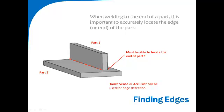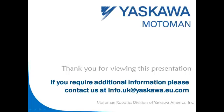Seam finding flexibility can be enhanced by finding the edge or end of parts, or by searching multiple locations along an extended seam. Macro job routines are provided with TouchSensing and AccuFast to detect edges. Seam finding tools can also be used for error proofing by detecting clamp positions or the presence of parts.